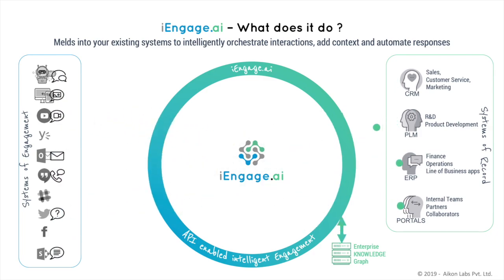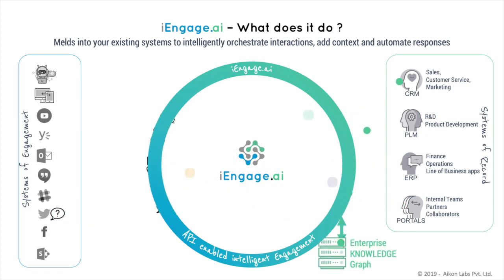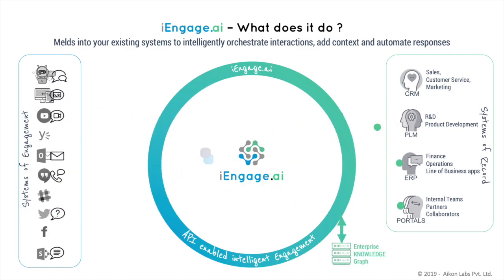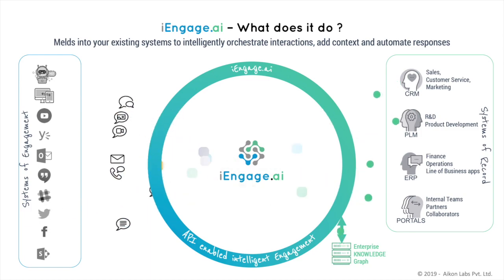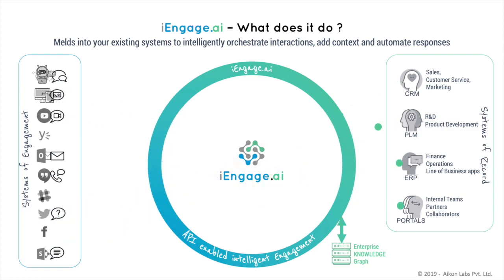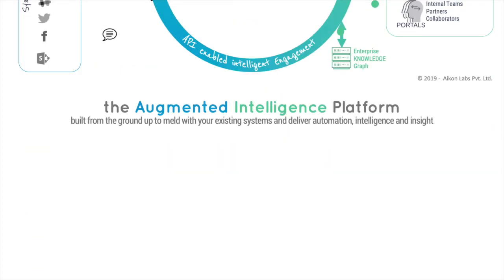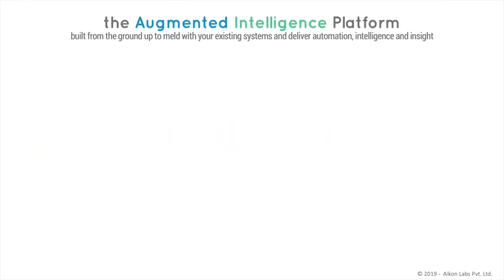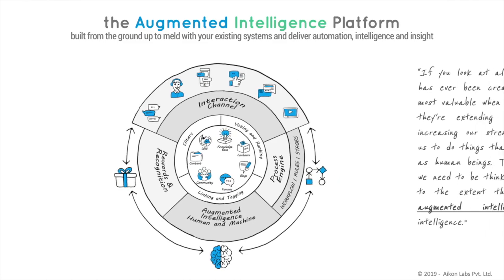iEngage is a platform that helps create an enterprise intelligence repository from interactions among all stakeholders, helping to smartly manage interactions towards successful transactions. This is how the iEngage API platform creates a seamless experience on both sides of the table.